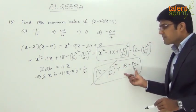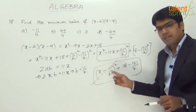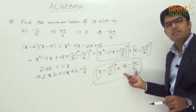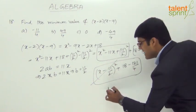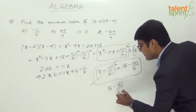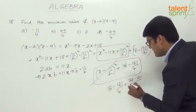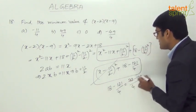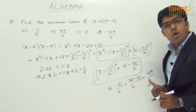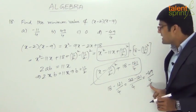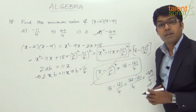When x equals 11 by 2, the squared part becomes 0, and what remains is 18 minus 121 by 4 — which is the minimum value. Simplifying: 72 minus 121 upon 4 equals minus 49 by 4. So the minimum value of this expression is minus 49 by 4, which is option D. This minimum occurs when x equals 11 by 2.